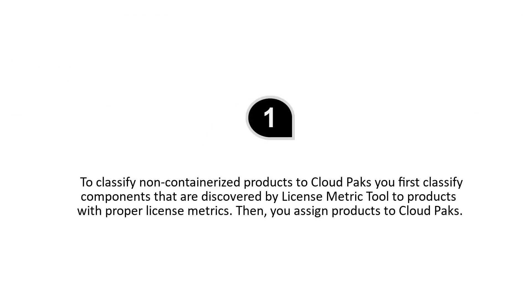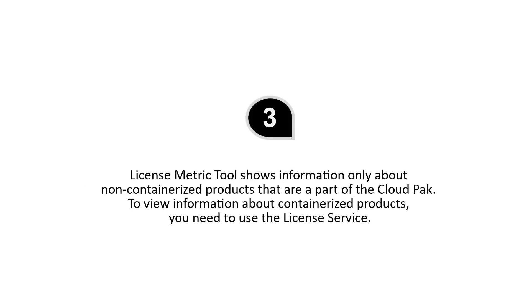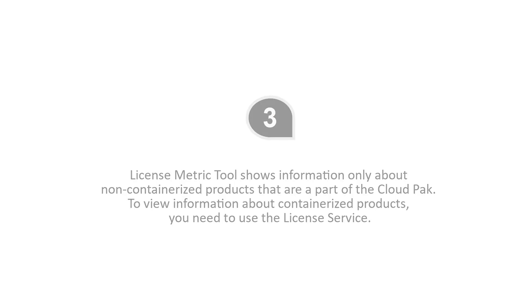Here's the takeaway. First, to classify non-containerized products to Cloud Packs, you classify components discovered by License Metric Tool to products with proper licensed metrics, then assign products to Cloud Packs. Second, this approach is necessary because a single component can belong to different product flavors with different conversion ratios. Third, License Metric Tool shows information only about non-containerized products that are part of the Cloud Pak; to view information about containerized products, you need to use the License Service.